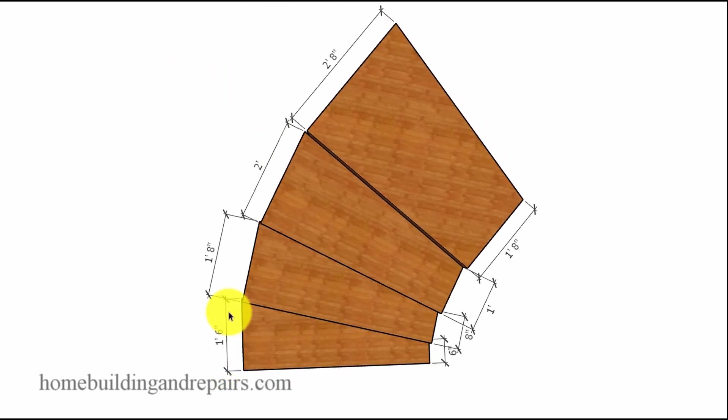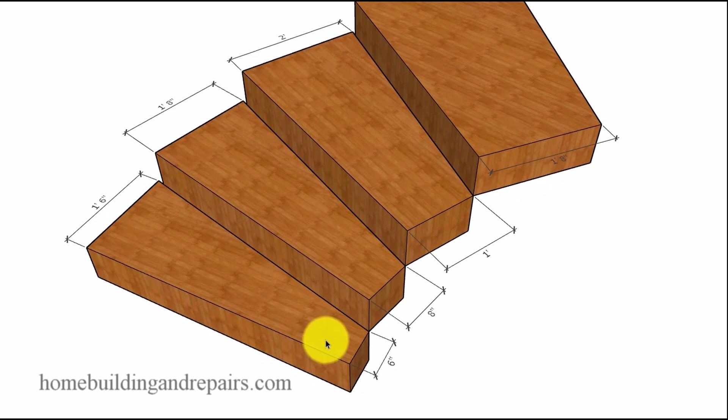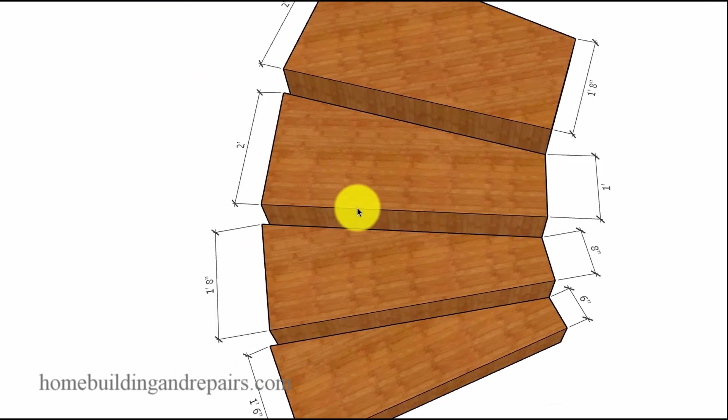So if we come over here, we have 1 foot 6, we added 2 inches, then we added 4 inches, and then we added 8 inches. So this would be, in my opinion, a consistently shaped stairway.